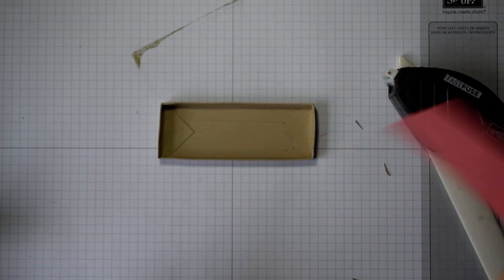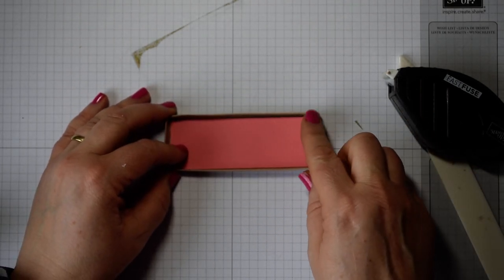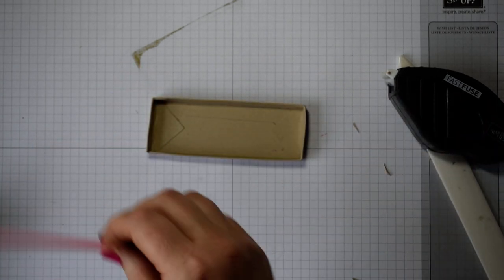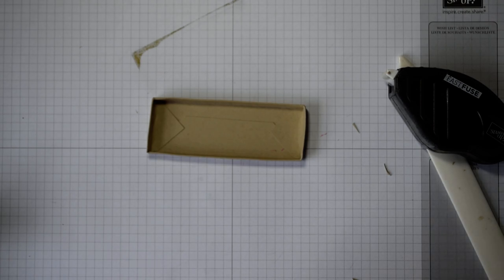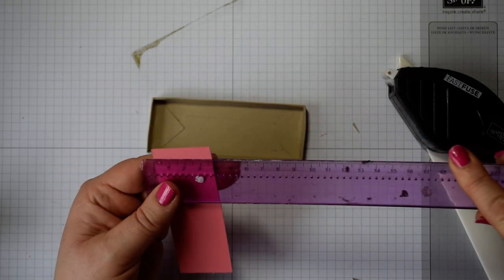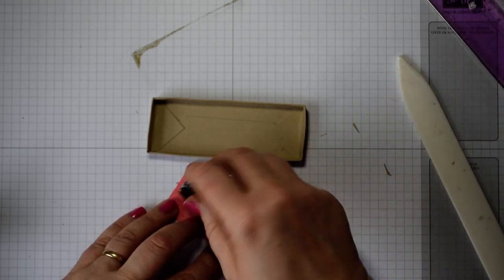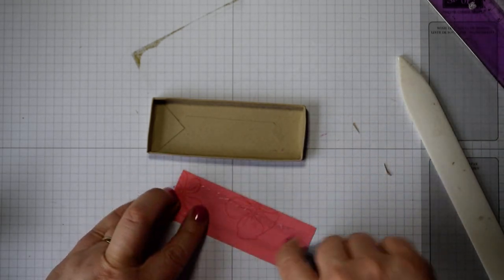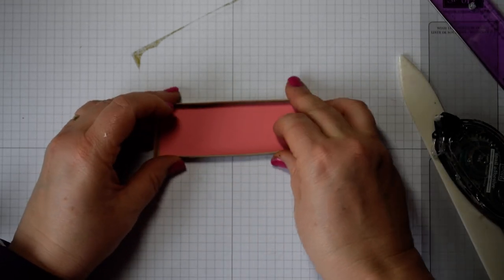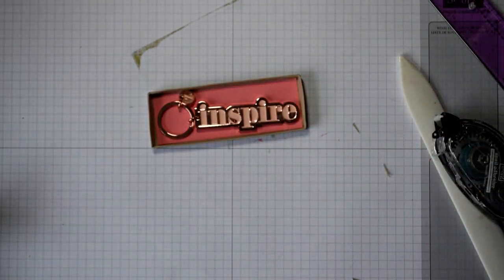But it doesn't look very pretty, does it? So all I've done is cut a piece of cardstock to go inside it, and that is about 10.8 by 3.8 centimeters. Just pop that on, and you can stamp on that if you wanted to pretty it up, and then that will fit our keyring.